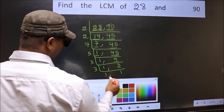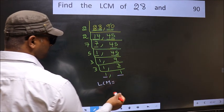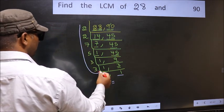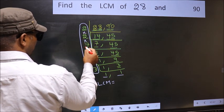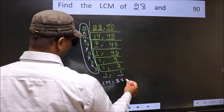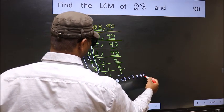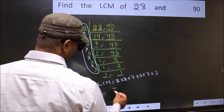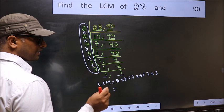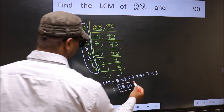So we got 1 in both the places. So our LCM is, LCM is the product of these numbers. That is 2 into 2 into 2 into 7 into 5 into 3 into 3. When we multiply these numbers, we get 1260 is our LCM.